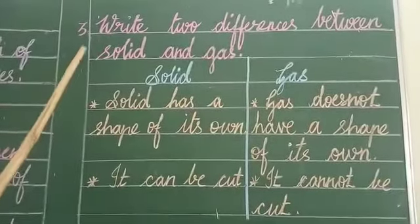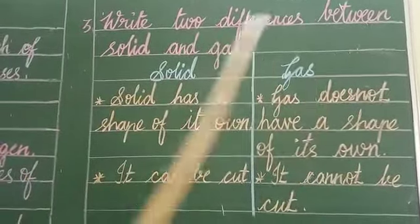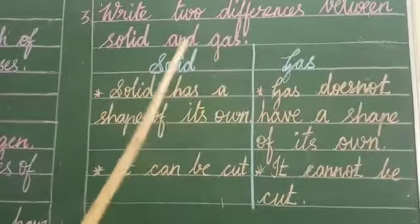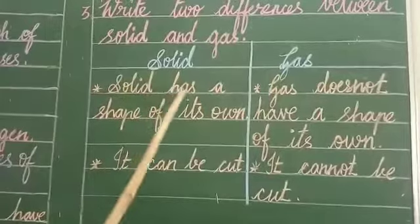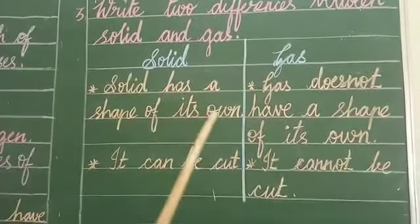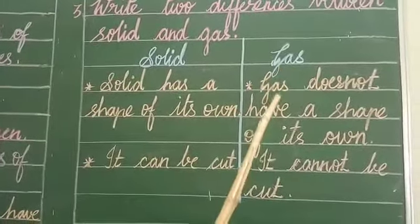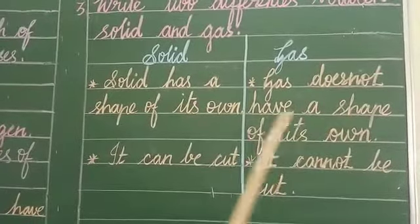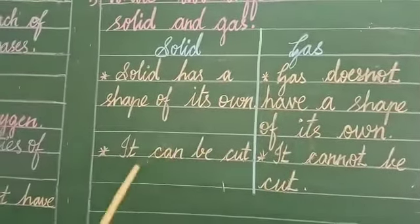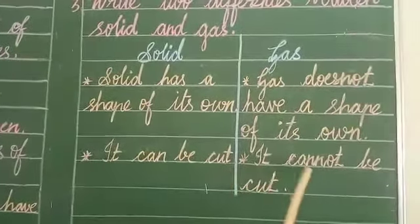Third question, write two differences between solid and gas. Solid: solid has a shape of its own. Gas: gas does not have a shape of its own. It can be cut. It cannot be cut.